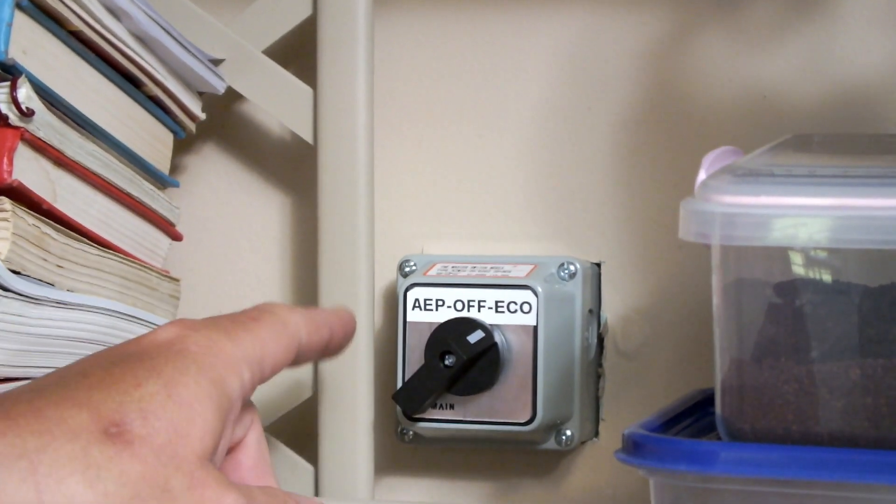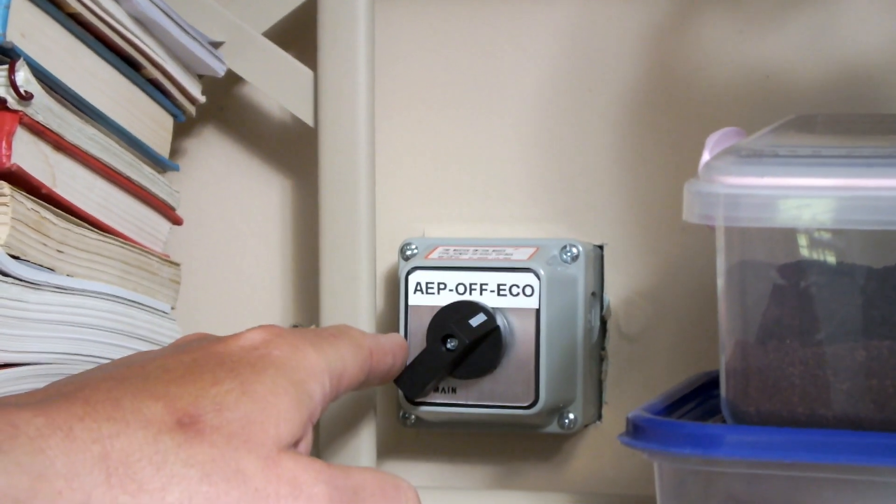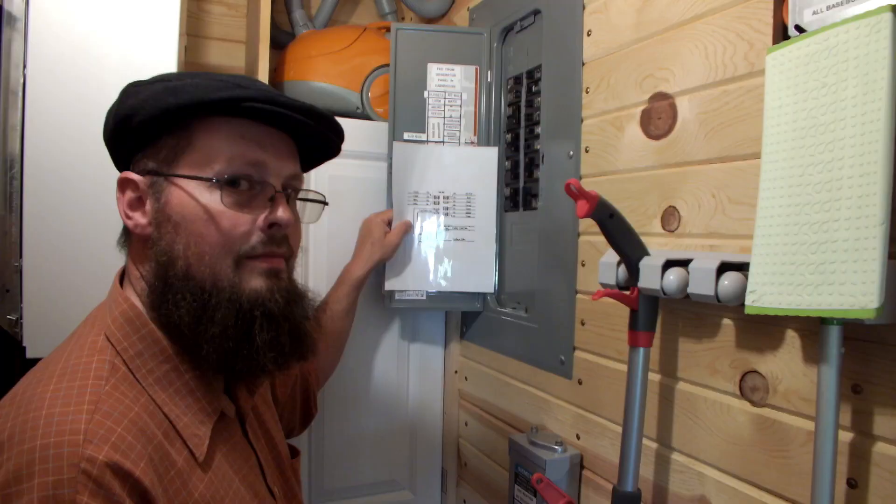And then we have a break before make, which means on-off-on selector cam switch for a manual transfer. And that's to go back on utility if we have to.